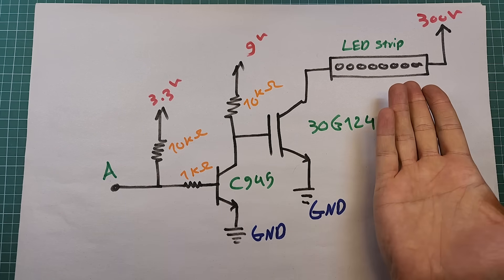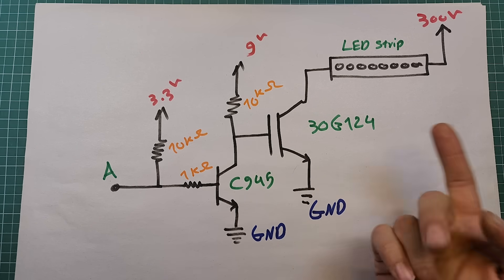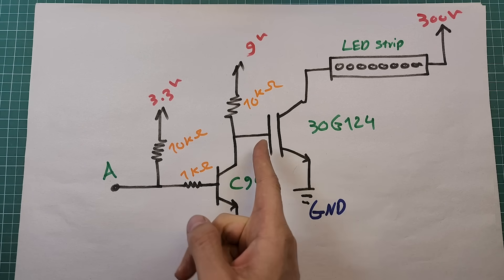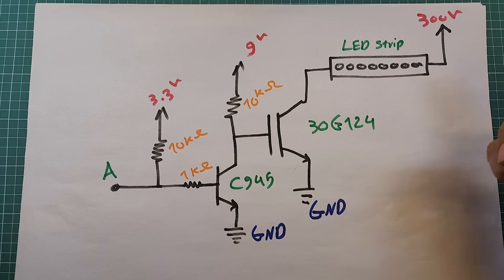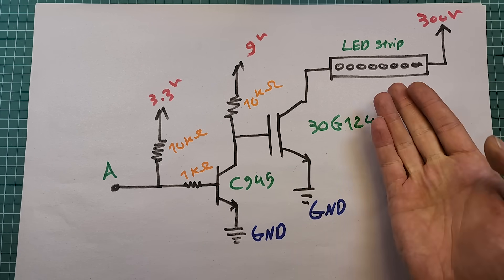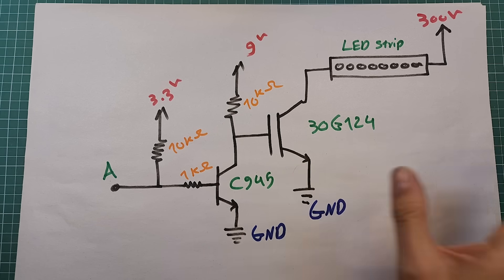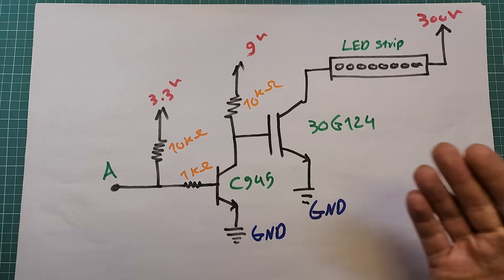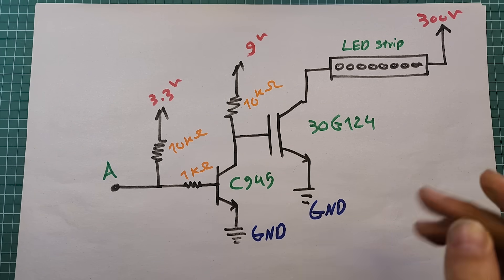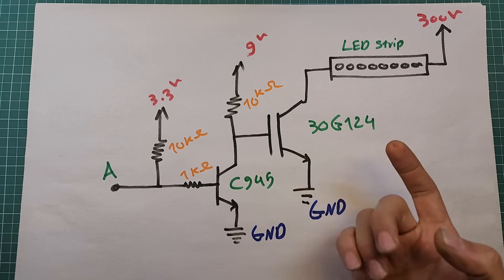Here is the circuit I used to switch the LED strips. I used an IGBT with the part number 30G124. If I apply a voltage greater than 4 volts to the gate pin of this IGBT, it turns on and passes the negative voltage to the strips. Since the positive voltage is already permanently connected to the strips, the strips turn on. A voltage lower than 4 volts turns the IGBT off. Since the STM32 microcontroller works with 3.3 volts, I can't directly drive the gate pin, so I designed a gate driver circuit using a regular transistor.